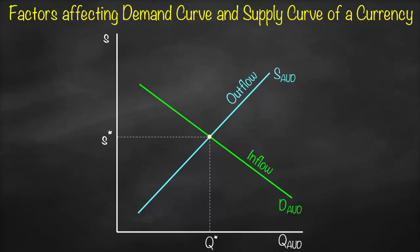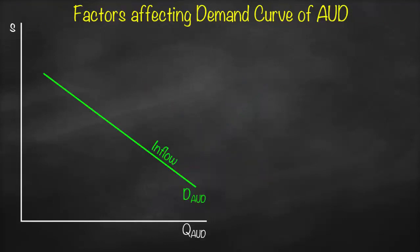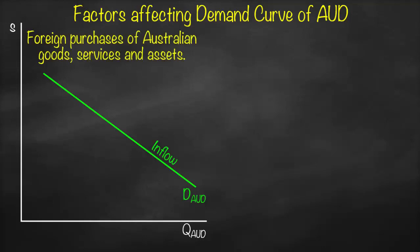Let's take examples of factors affecting the demand curve for the Australian dollar. The demand for Australian dollar means that foreigners would like to buy Australian dollars to purchase goods, services, or assets — either physical assets such as a factory, or financial assets such as a bond or share. This represents inflow, as foreigners pay Australians, so Australia receives cash inflow.